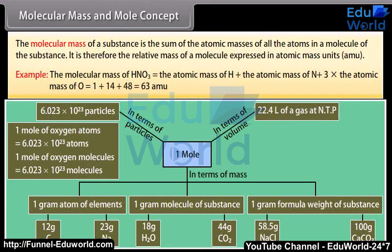For example, the molecular mass of HNO3 is equal to the atomic mass of H plus the atomic mass of N plus 3 times the atomic mass of O, which is equal to 1 plus 14 plus 48, which equals 63 units.